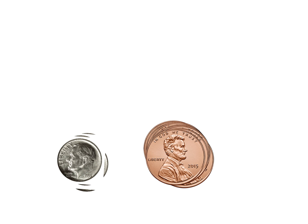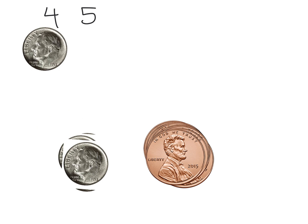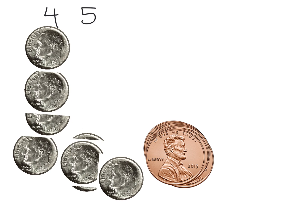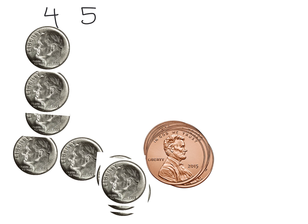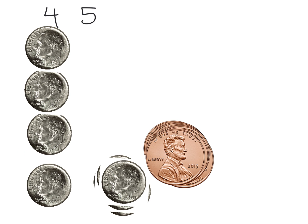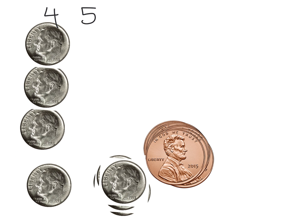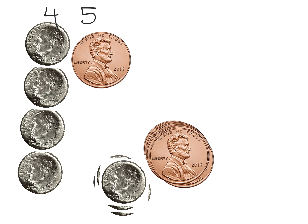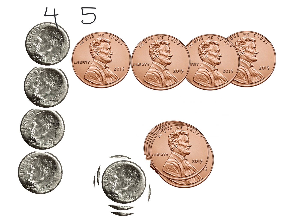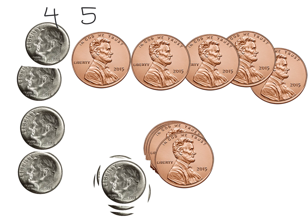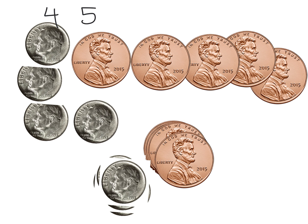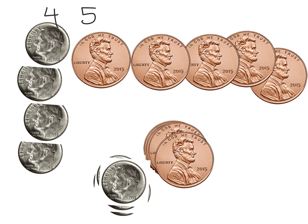Really nothing particularly revolutionary. If we want to represent the number 45, we're going to represent that with four dimes, and of course my dimes are all kind of messed up, so there's four dimes, and then five pennies. So there's our four dimes and five pennies, and that's the idea.